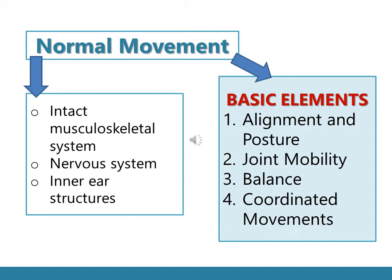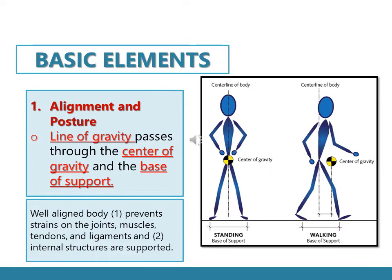What are the basic elements of normal body movement? There are four elements that should be present: alignment and posture, joint mobility, balance, and coordinated movements. We're going to discuss all these basic elements one by one. The first element is proper alignment and posture.